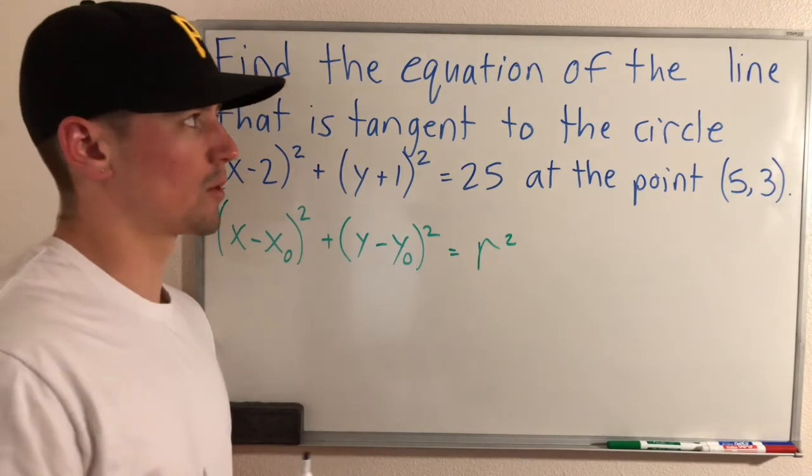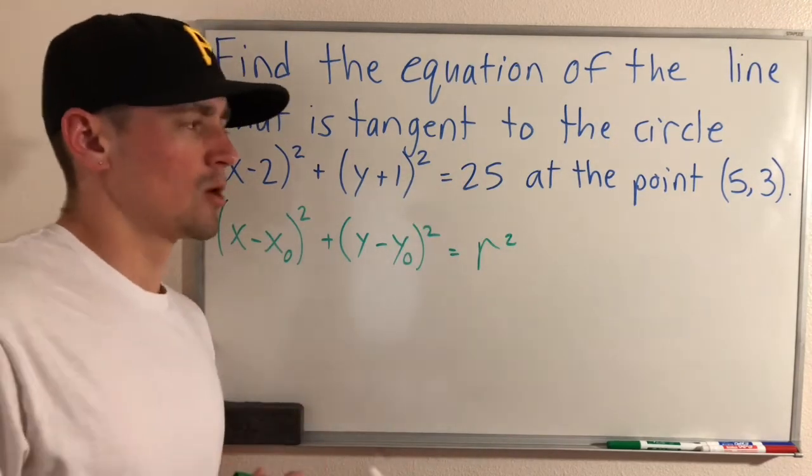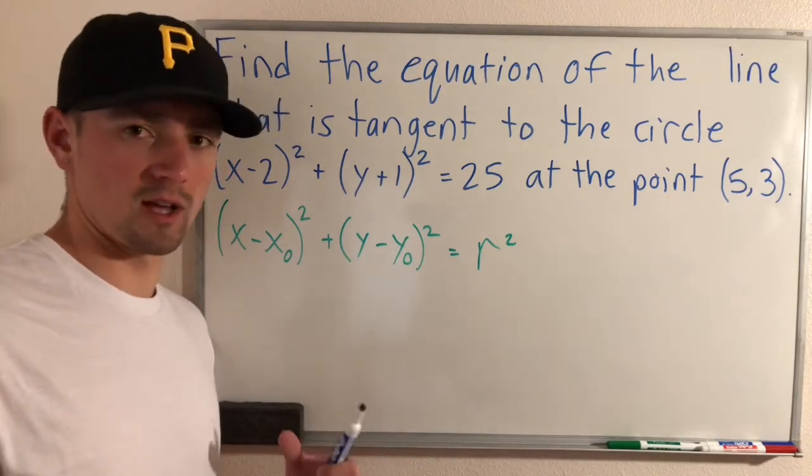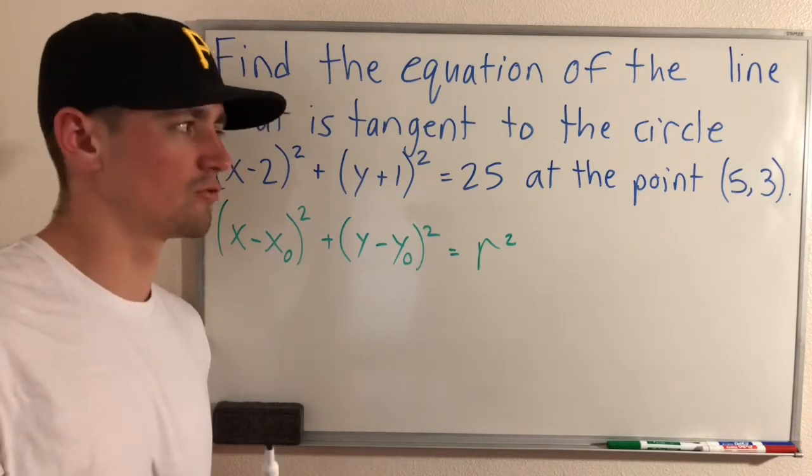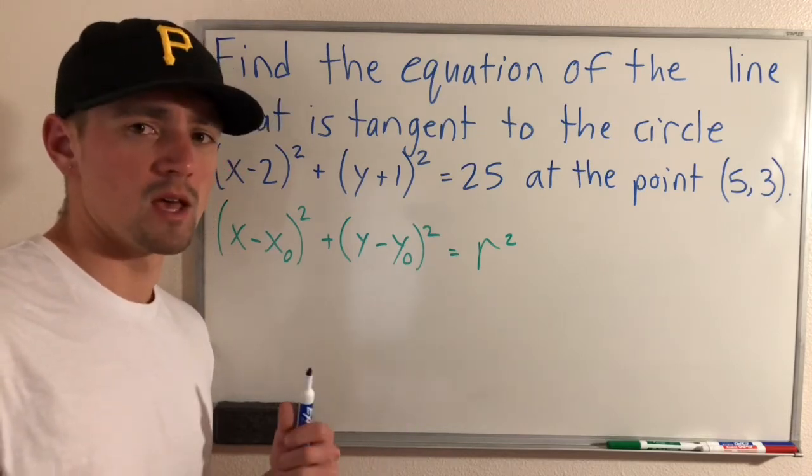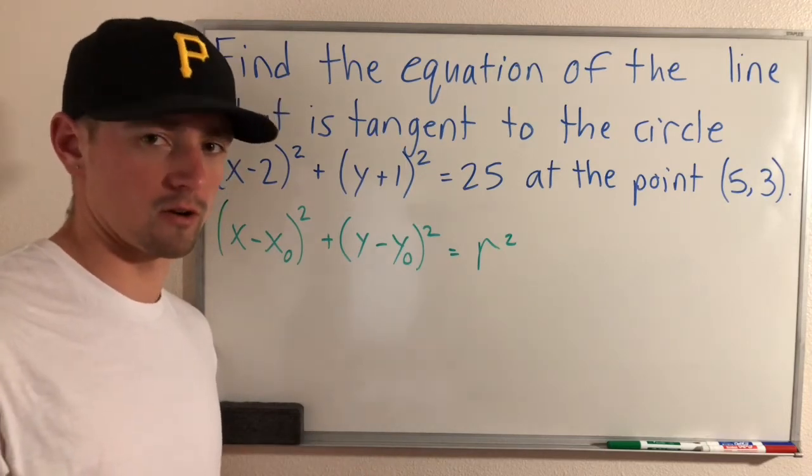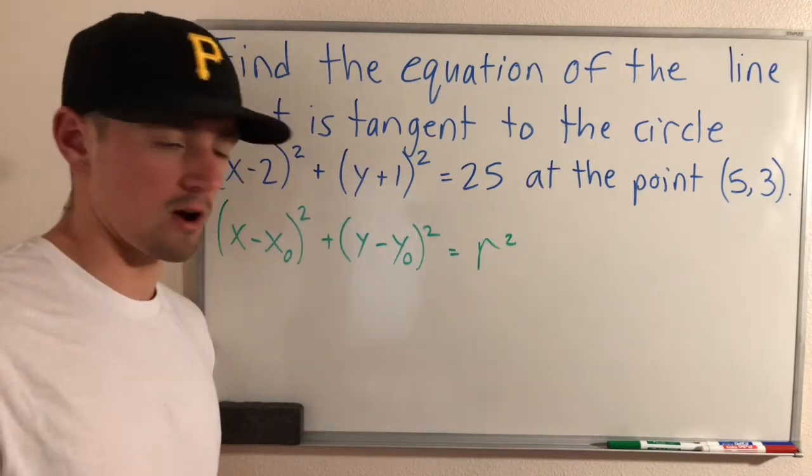So when you're solving a problem like this where we're trying to find the tangent line equation to the circle, you could do this by taking the derivative. But I'm showing you the kind of trick here that can help you avoid having to take a derivative or apply implicit differentiation or anything like that. In order to do it, what you would want to do is let's think about what this would look like on a graph.